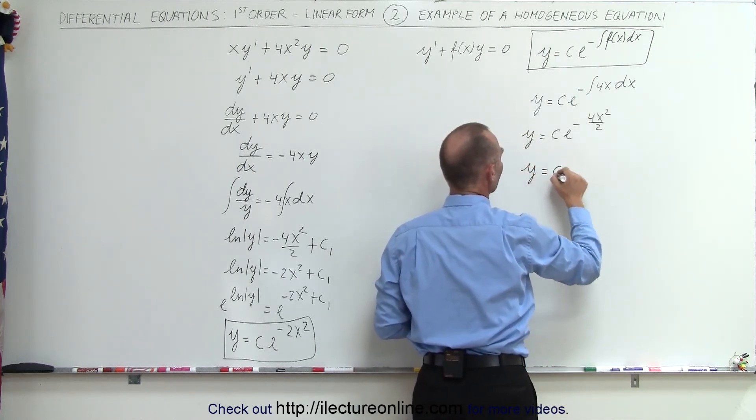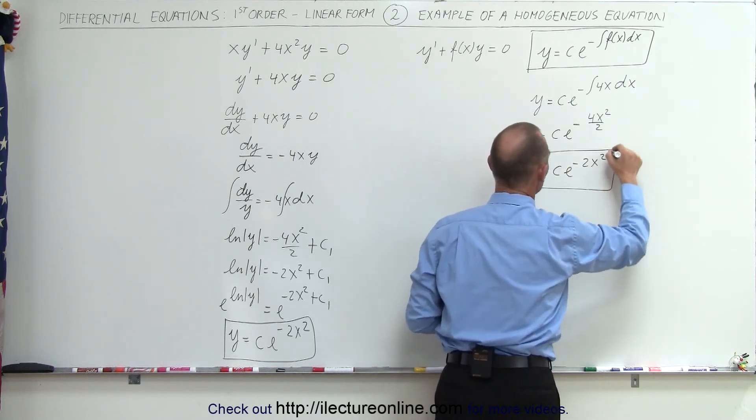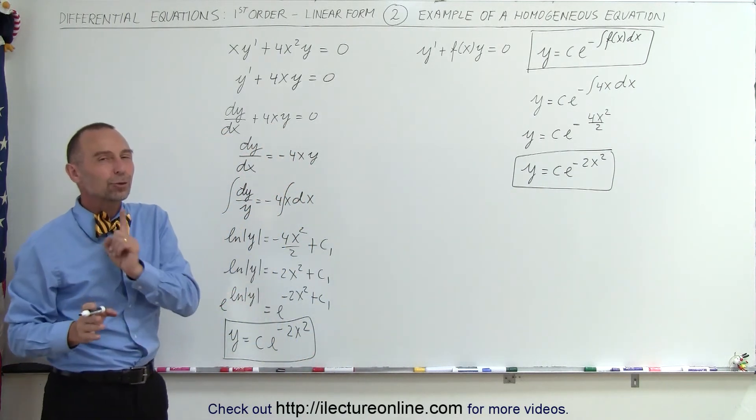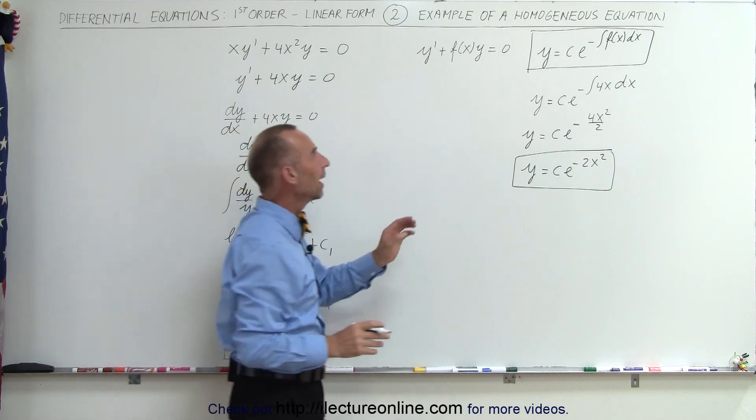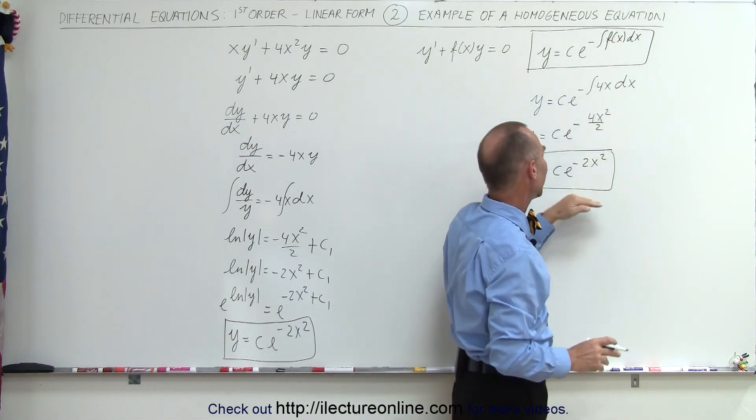Finally, I can say that y equals c e to the minus 2x squared, which is the exact same result I got before. So you can save yourself a little bit of time by realizing I know what the general solution looks like, then simply plug in what f(x) equals, do the integral, and get the solution.